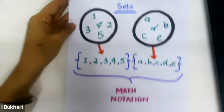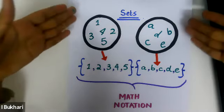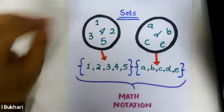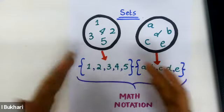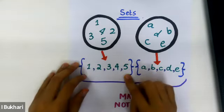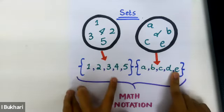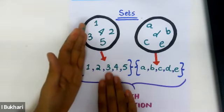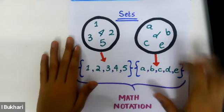The math textbook form of sets, in diagrammatic form, shows a bunch of random numbers or elements. In math notation, they are put in curly brackets and each element is listed with a comma between elements. This is a set of numbers from one up to five, and this is a set of the first five alphabets.